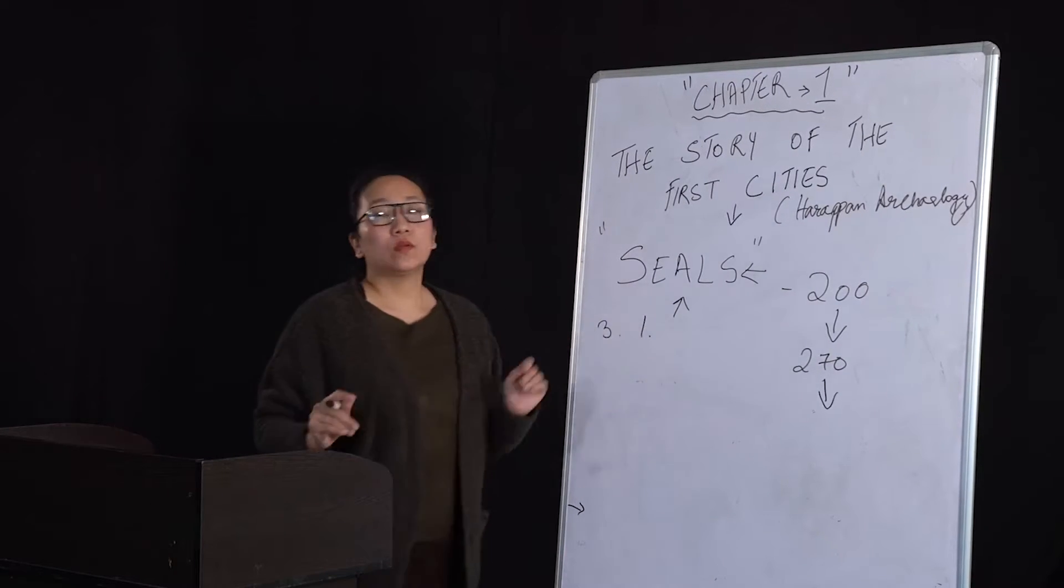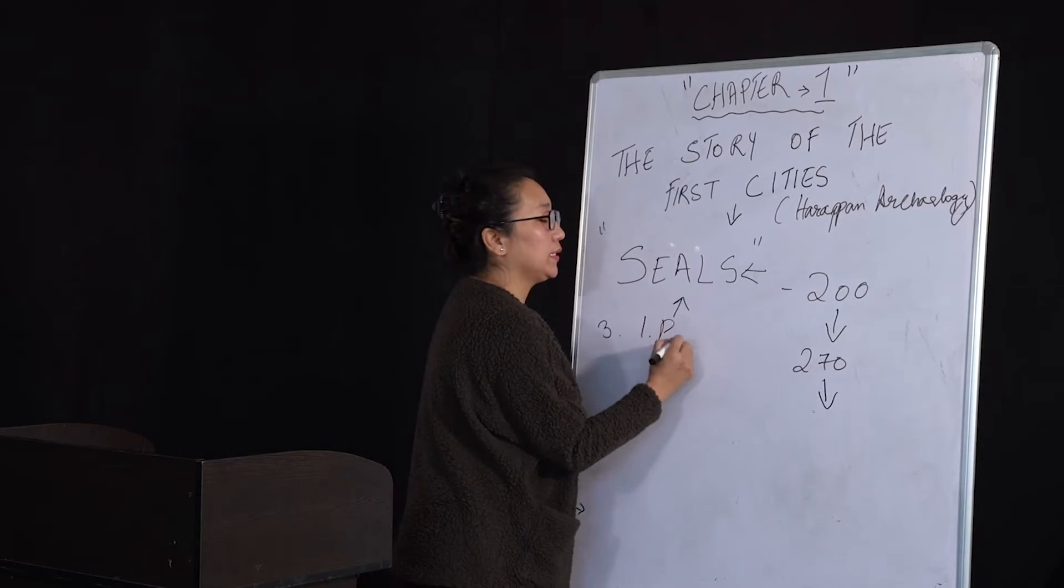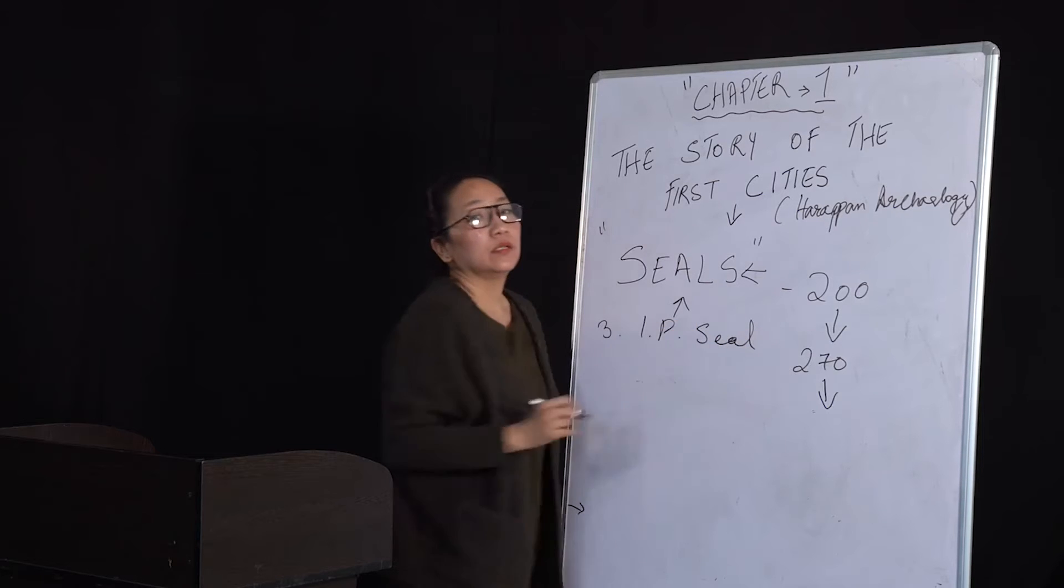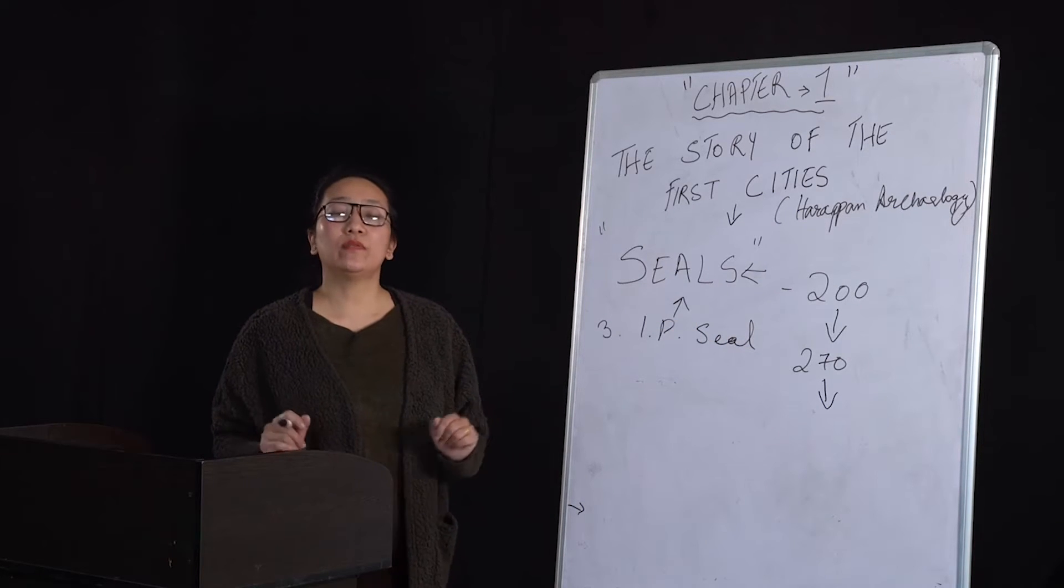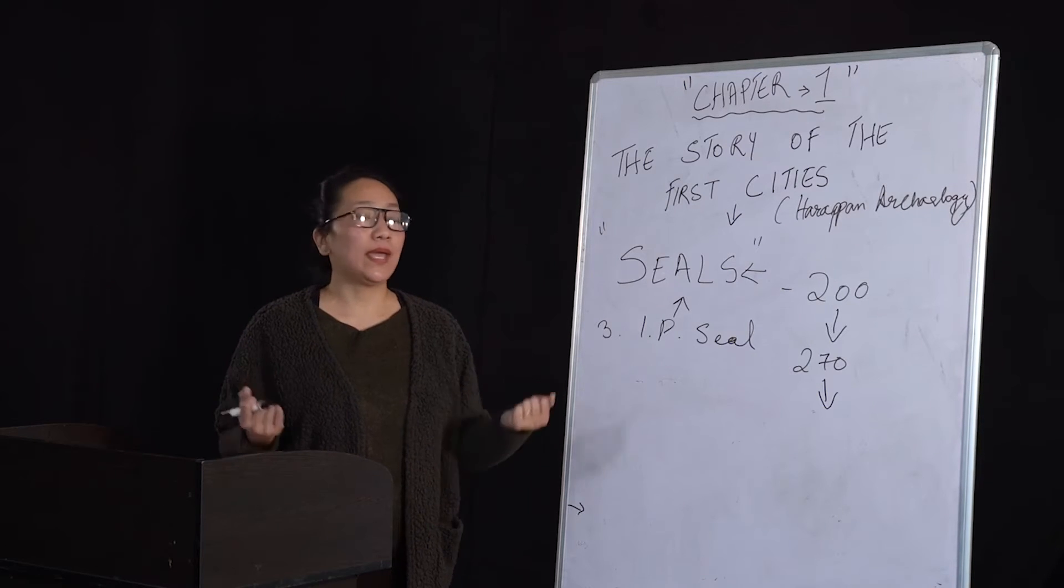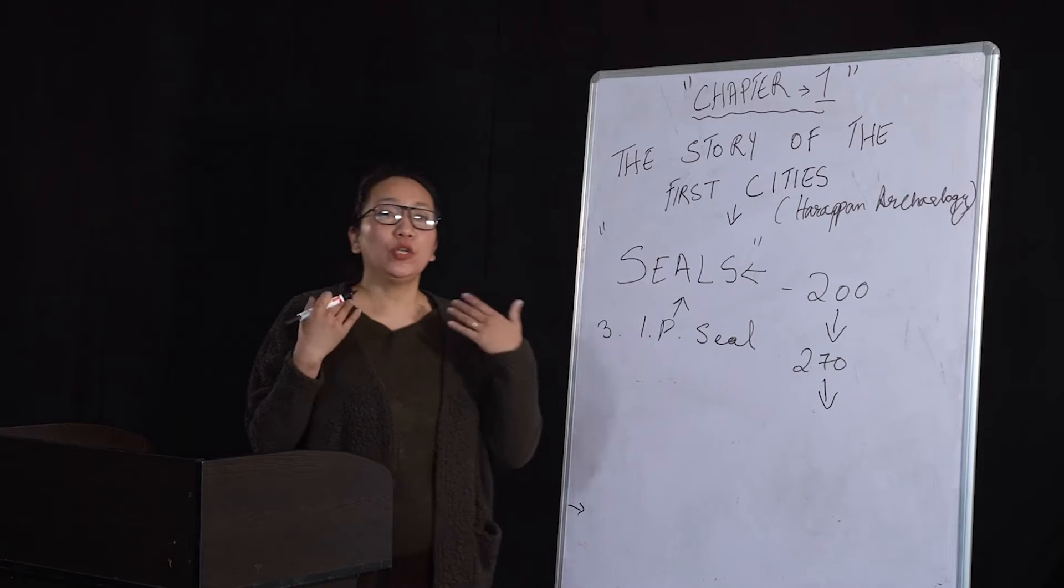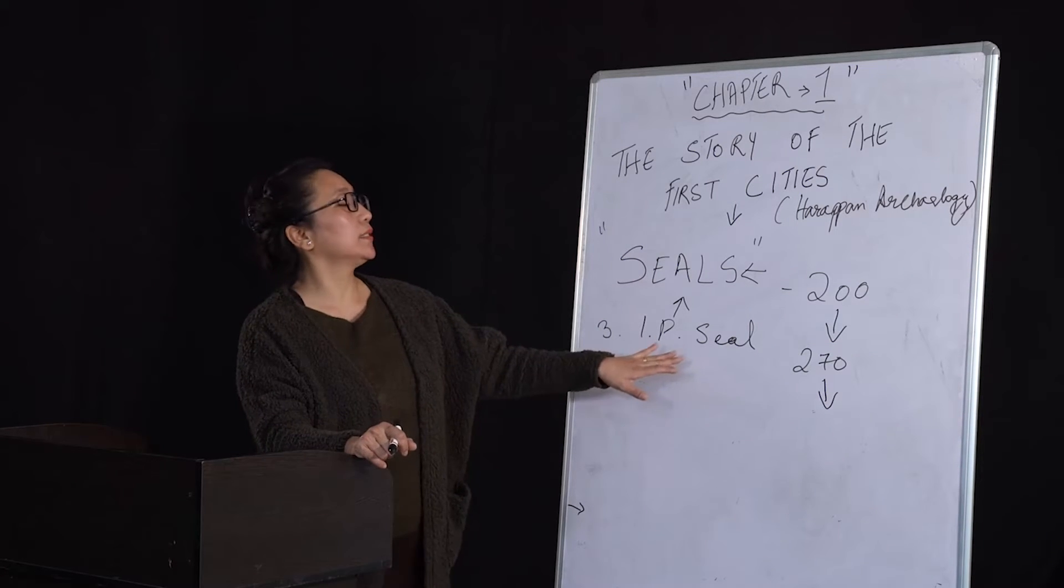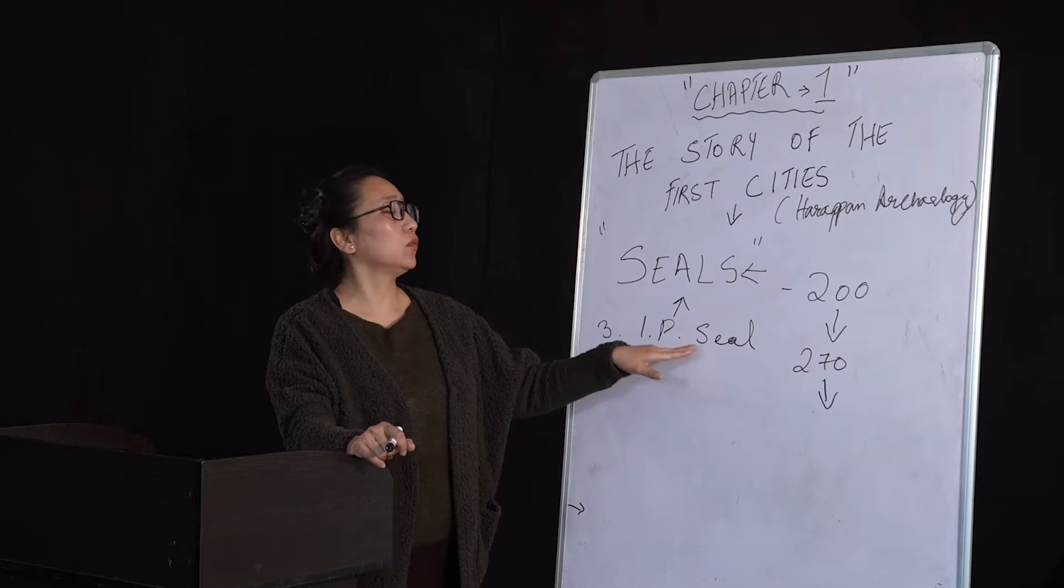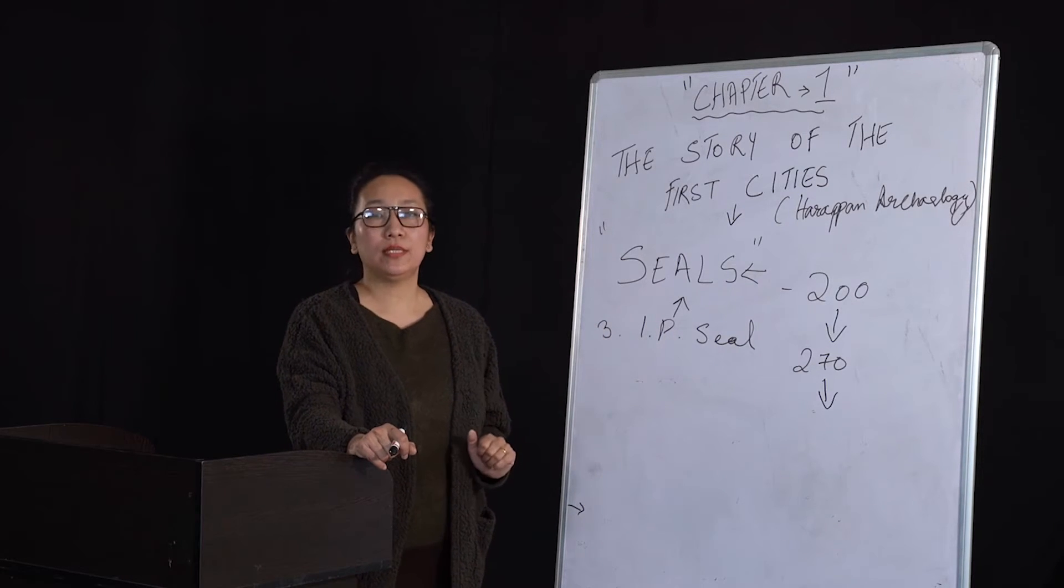One was called the Pashupati seal or the Shiva seal. This was found in large numbers. In this seal, there was a man with three heads, sitting majestically cross-legged in a very yogic style. This is considered to be the most important seal because it also relates to a religious seal.